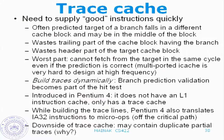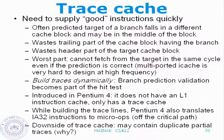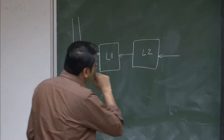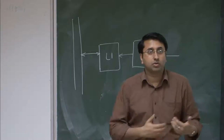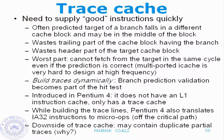The second topic is trace cache, used in Intel processors — it was introduced in Pentium 4. The idea was that you need to supply good instructions quickly into the pipeline. By good instructions, I mean you almost always want to remain on the correct path, so you have to make correct branch predictions. If you are not, you are essentially processing instructions which will eventually be thrown away — you are wasting time. One way to achieve this is to have smart branch predictors; another way is to have a trace cache.